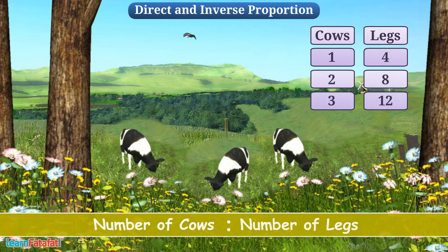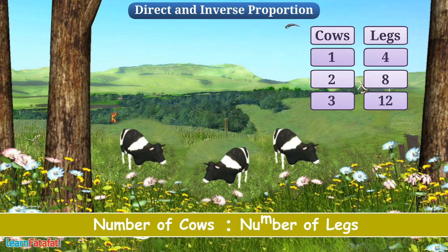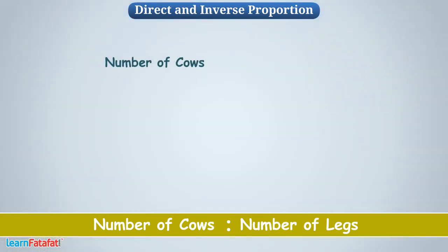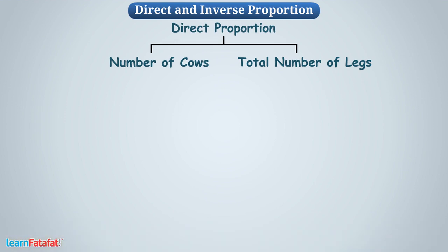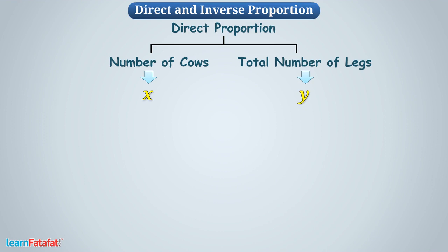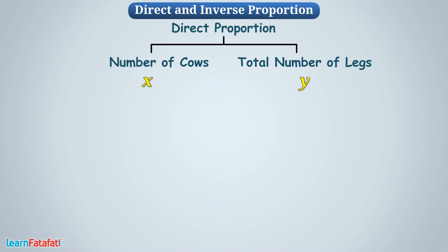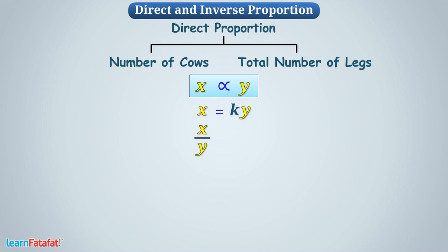In such a manner that the ratio of number of cows to the number of legs remains constant. We say that number of cows and total number of legs are in direct proportion. Let's write the number of cows with letter X and total number of legs by letter Y. Then we can say that X is in direct proportion with Y, represented as X directly proportional to Y. In such case, there is always a constant number K such that X is equal to KY, or X by Y is equal to K.